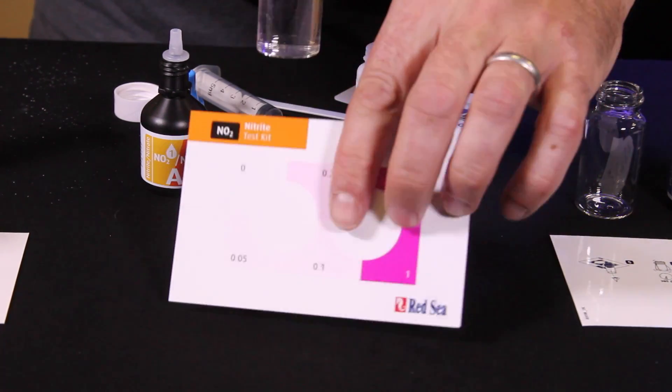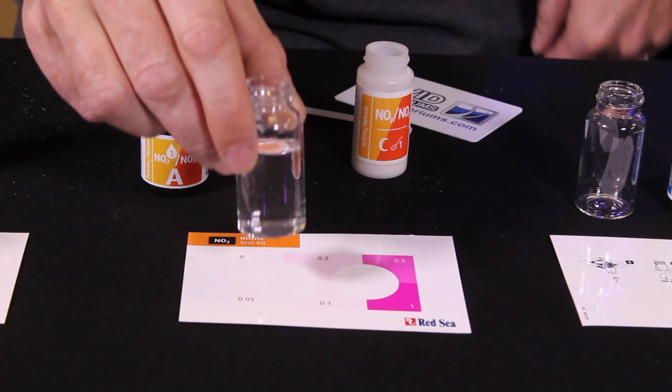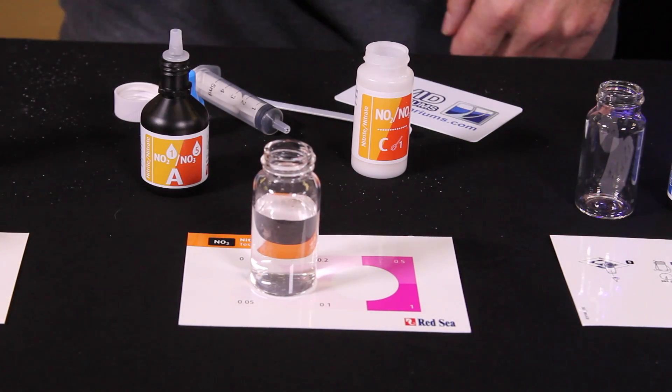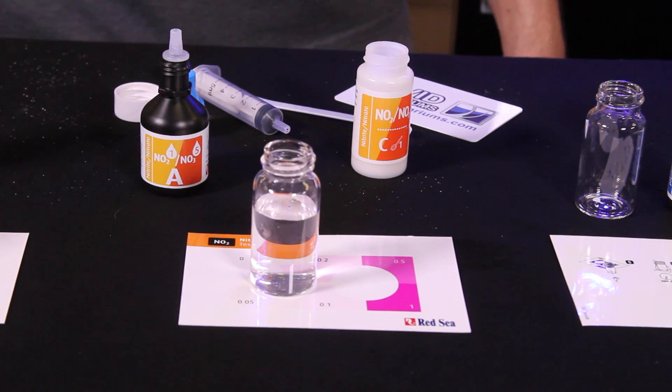And then we need to wait nine minutes for our nitrite test results. Now the reagent has dissolved. I'm going to flip the card over and set it on our color comparison chart. We'll come back and check our nitrite test results shortly.